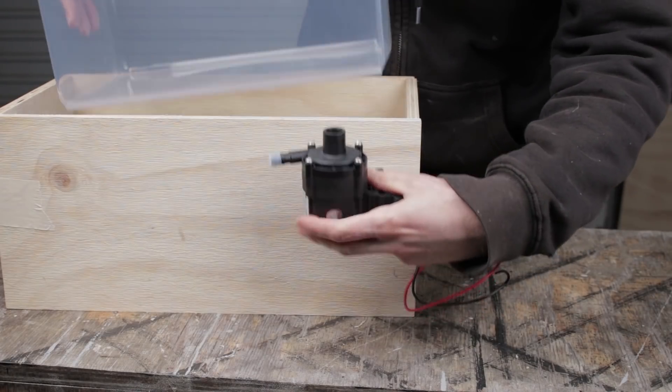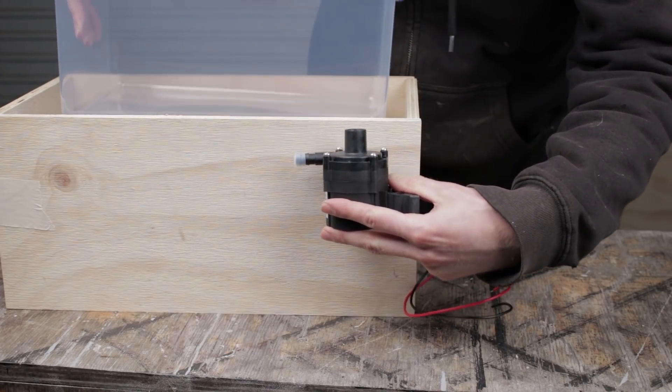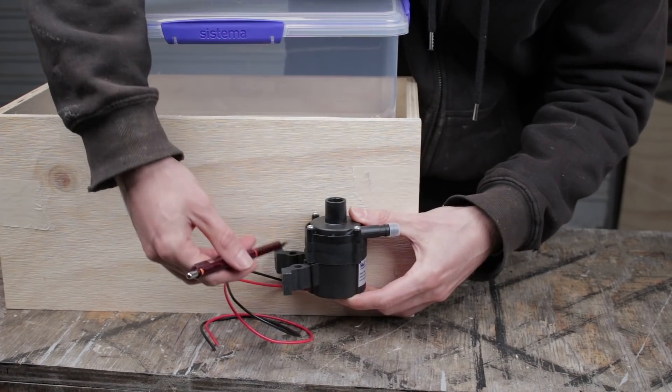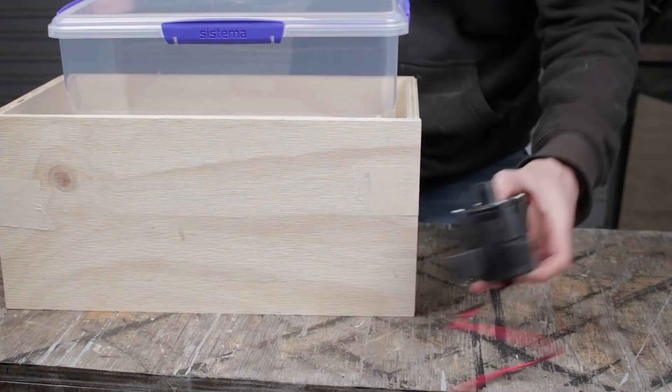Anyway, with the front face done I can sort out the rest of the box. I need to make a cutout in the back to give access to the pump and the hoses and for airflow. So again just eyeballing what's going to fit.